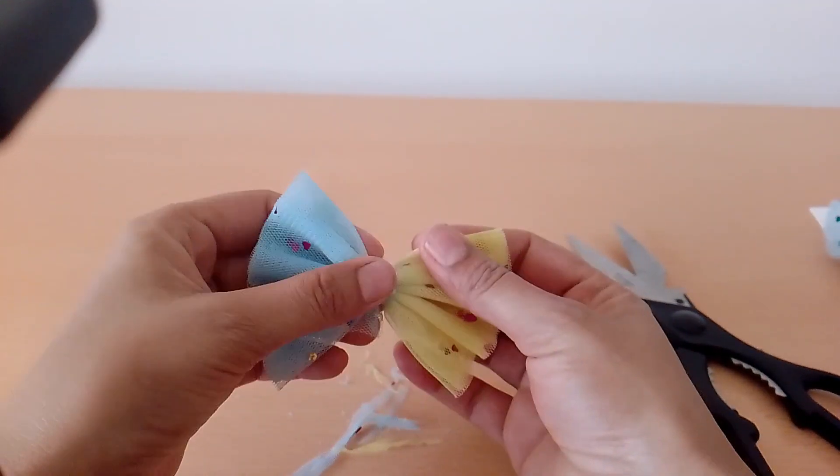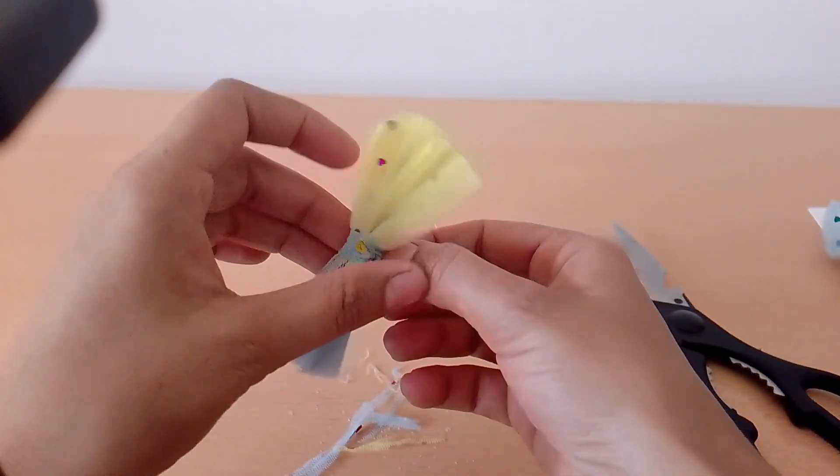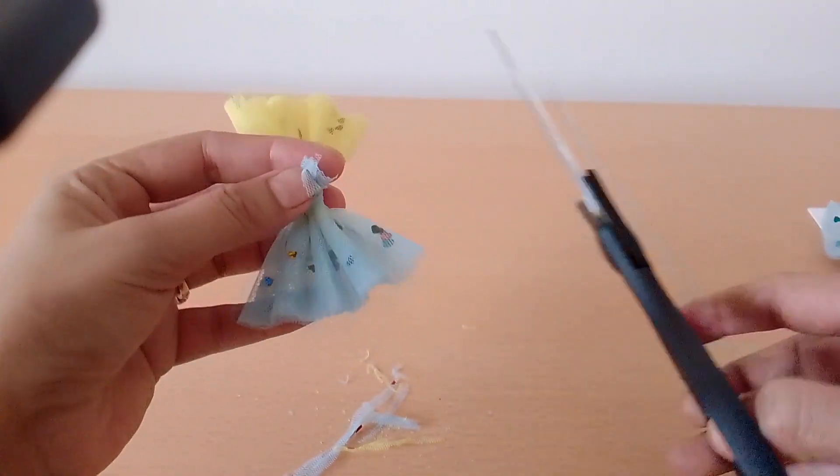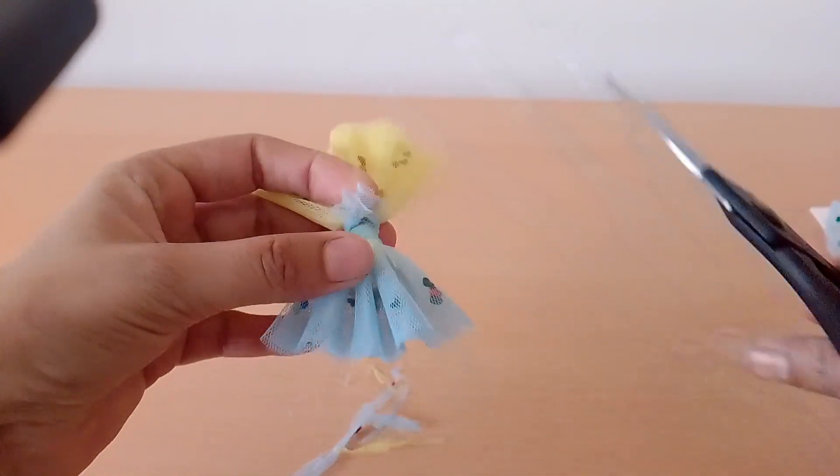And in the last step you just have to attach an alligator clip with the bow and your tulle bow clip is ready.